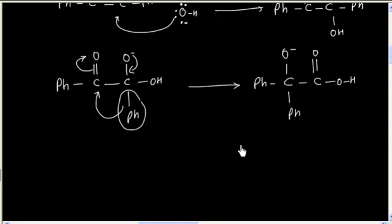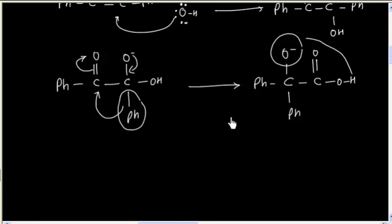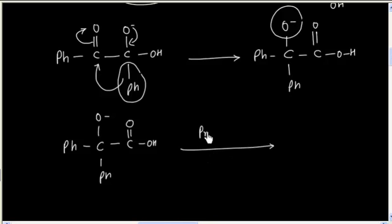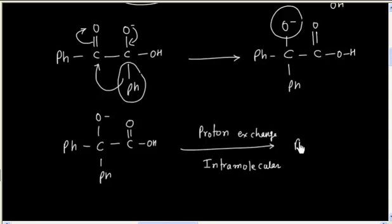Next step is intramolecular proton exchange. This OH minus is more basic, and we have an acidic functional group, so this H plus will be transferred to this oxygen. So this step is intramolecular proton exchange, and we will have this as the product.